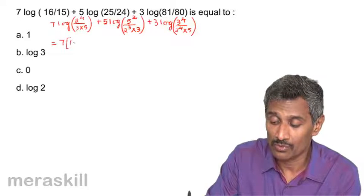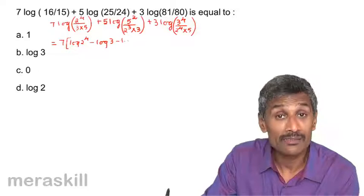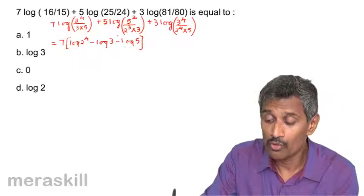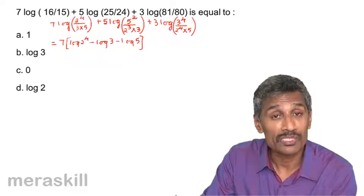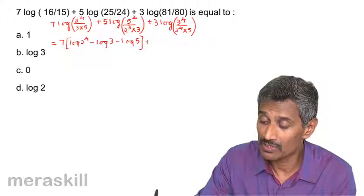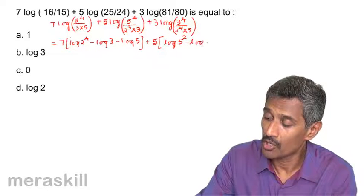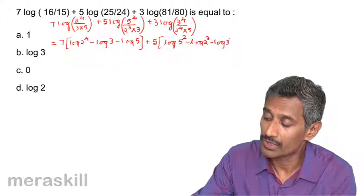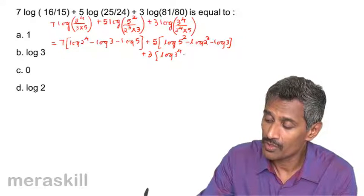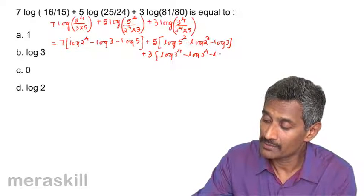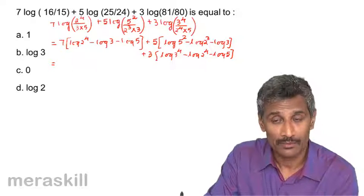Now this can be written as: 7(log 2⁴ minus log 3 minus log 5), and we need to be careful that both 3 and 5 are in the denominator so each is preceded by a minus sign. Similarly, the next term is 5(log 5² minus log 2³ minus log 3), and the third is 3(log 3⁴ minus log 2⁴ minus log 5).